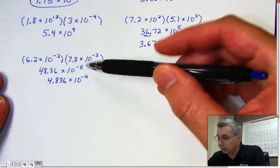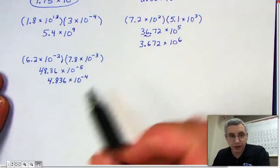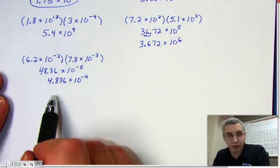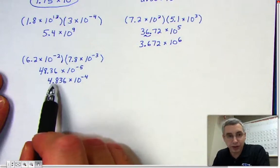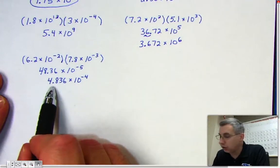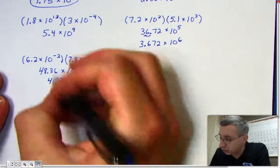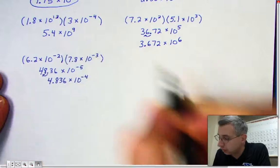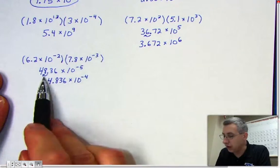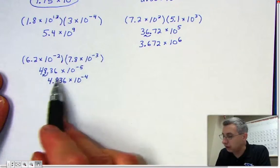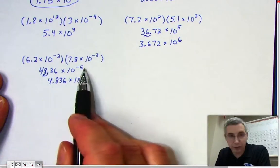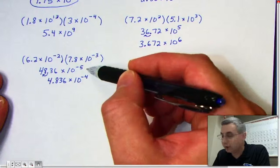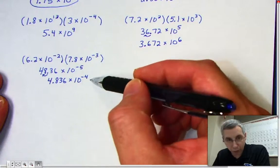Because 48 is larger than 10, it's not proper scientific notation — you need to do a little correction. Move this decimal over once, and when you do that you have to add 1 to the exponent. Remember, when you add 1 to negative 5, it becomes negative 4.